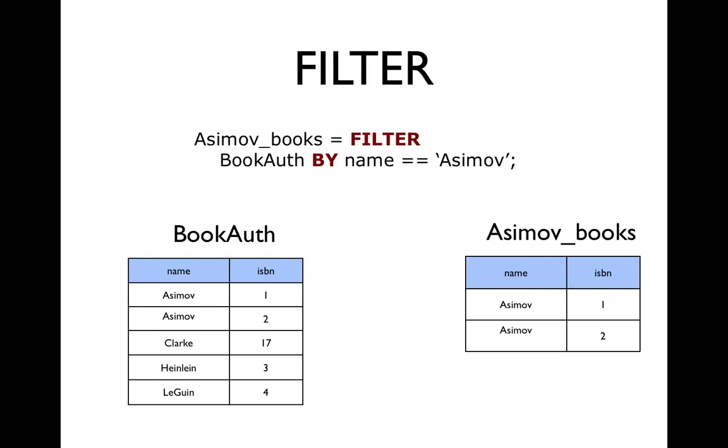If you want to remove tuples, then you use the filter operation. This can't change the values of any rows. It just lets you narrow a relation down to those that satisfy this particular predicate. In this case, the name being Asimov.